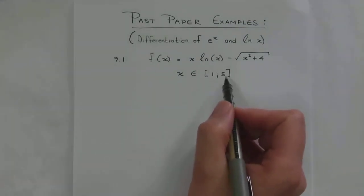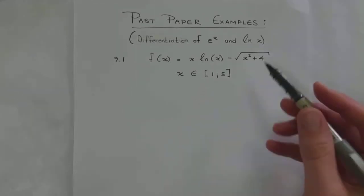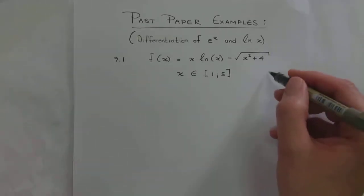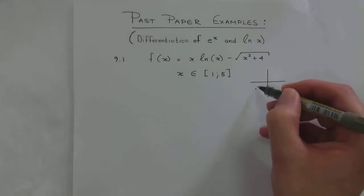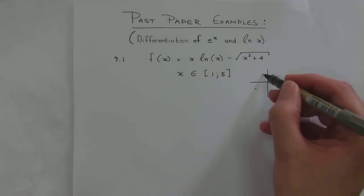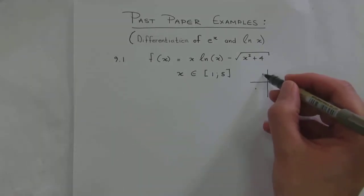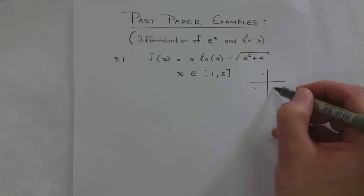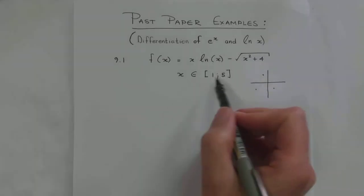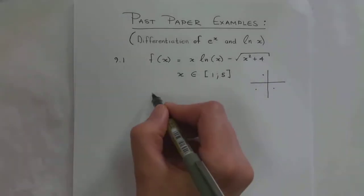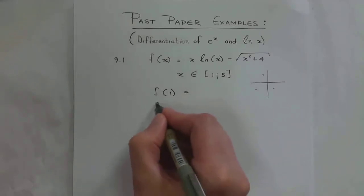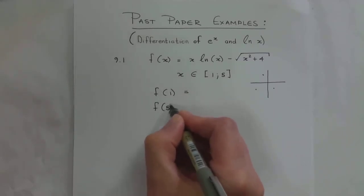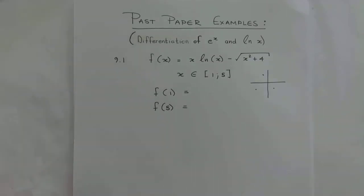In order for there to be a zero, the graph has to go either from negative below the x-axis to positive above the x-axis, or from positive above the x-axis to negative below the x-axis. So to establish this root, I'm going to have to work out f(1) to see what value that gives me, and work out f(5) to see what value that gives me.